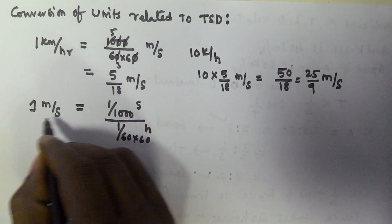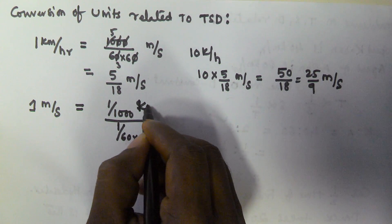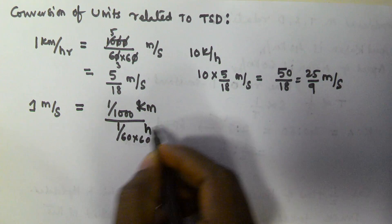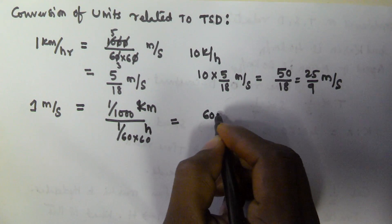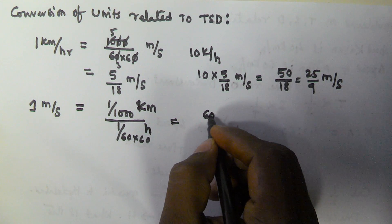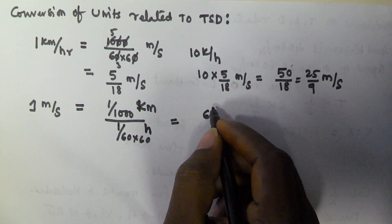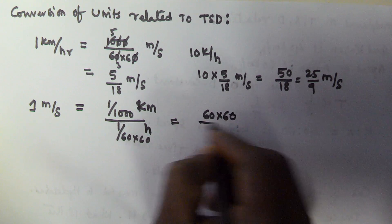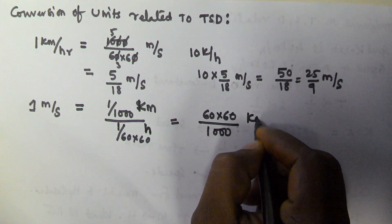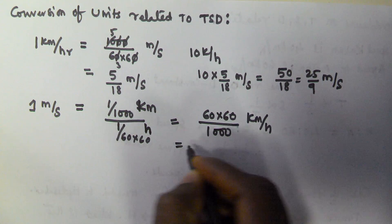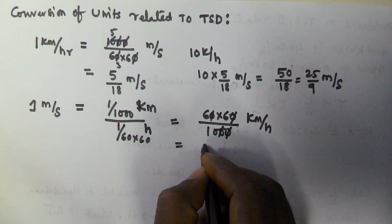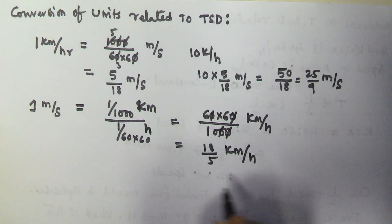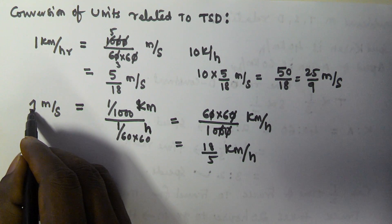So one meter per second is going to be equal to 60 into 60 by 1000, that is kilometers per hour. If you solve this, it is going to be 18 by 5 kilometers per hour. So if you want to convert meters per second into kilometers per hour, multiply by 18 by 5.